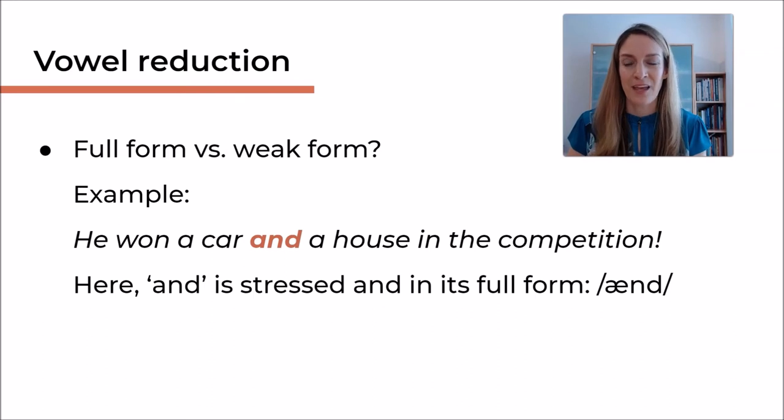And sometimes it is unstressed and turns into a weak form with often a schwa sound. Here's an example. Have a look at this sentence: He won a car and a house in the competition. So here we have the word AND, a function word, a linker, usually experiencing vowel reduction. But in this sentence, because we're so surprised that this guy won two things, a car and a house, we would stress AND.